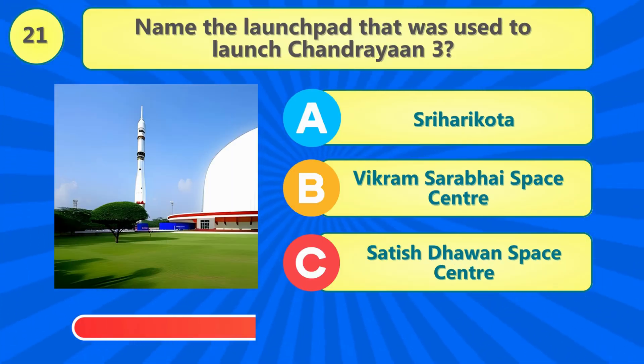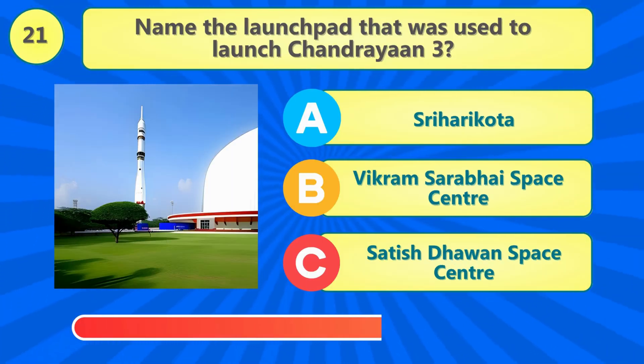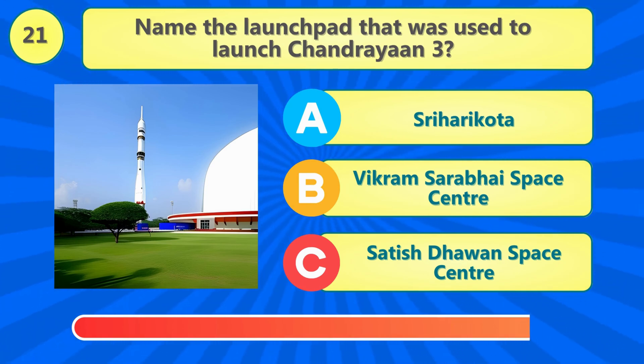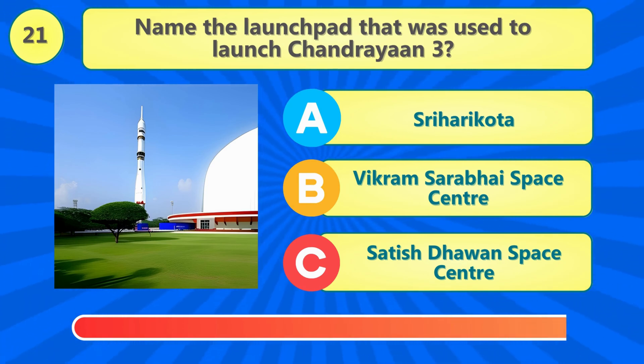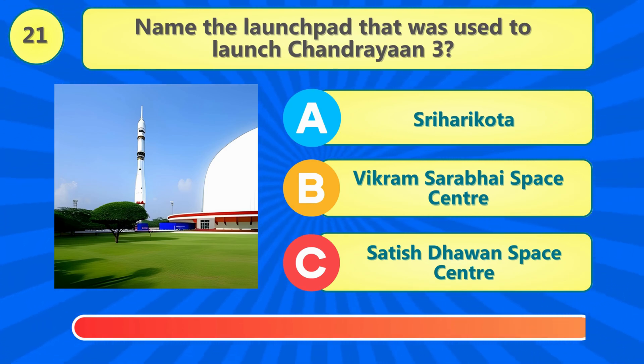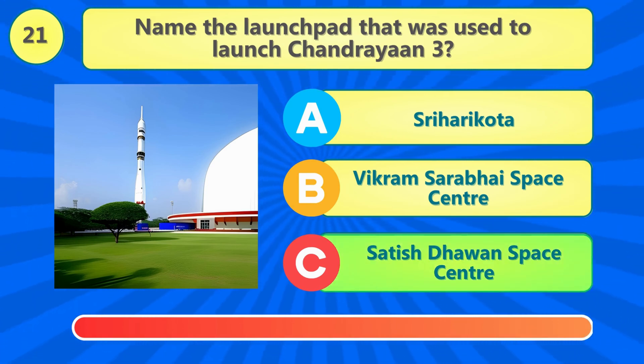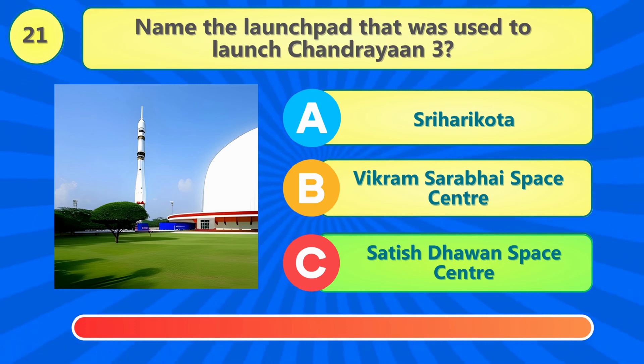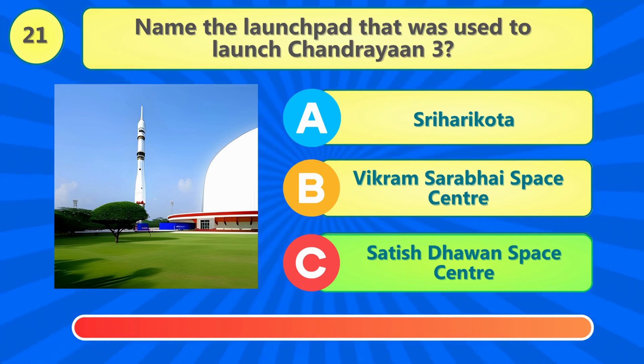Name the launch pad that was used to launch Chandrayaan 3. It's the Satish Dhawan Space Center.